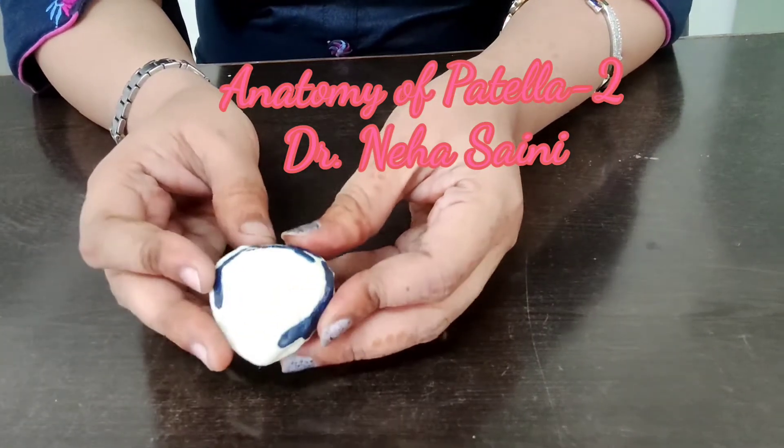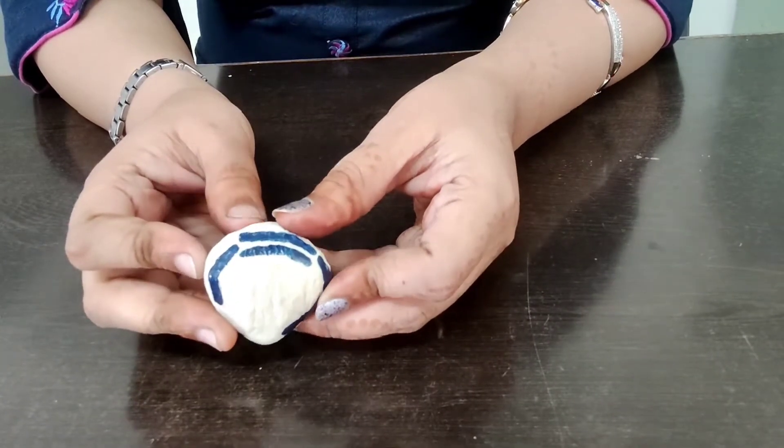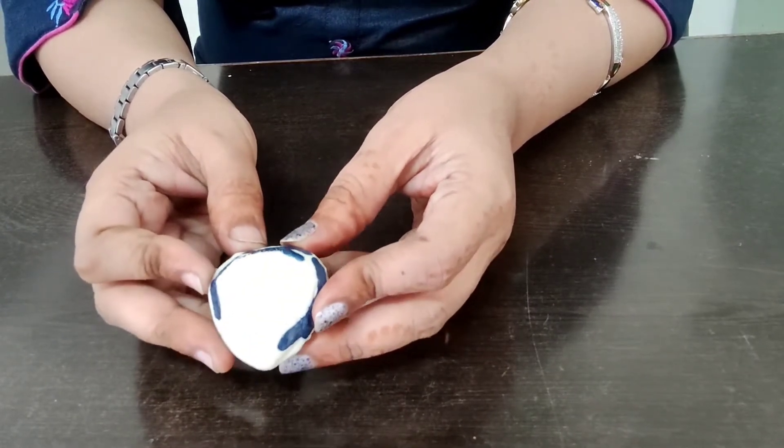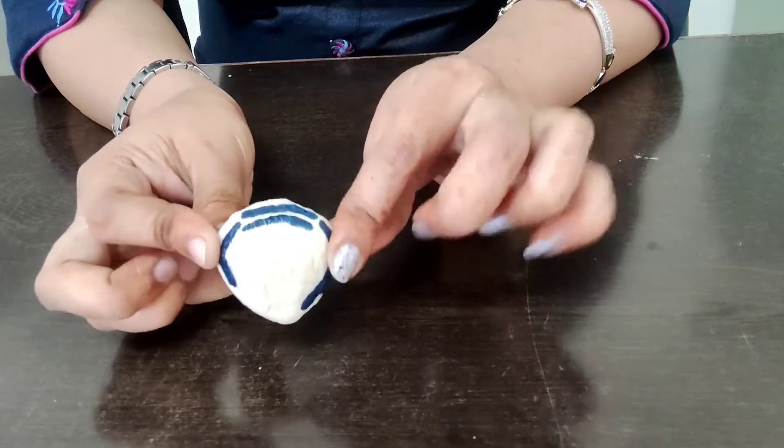We have discussed the side determination and attachments of this bone. For side determination, we should understand the lateral and medial parts of this bone.